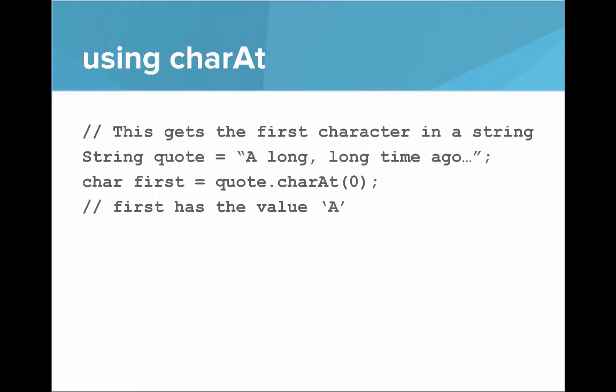So let's look at using charAt. So this code here declares a string called quote, which is equal to a long, long time ago. And then we say char first equals quote dot charAt zero. And then first gets the value of the character a, which is the character at the zeroth position. So remember, we start at zero, not one.